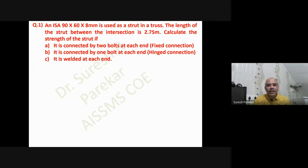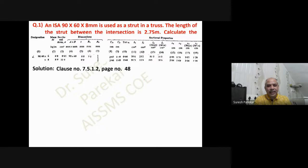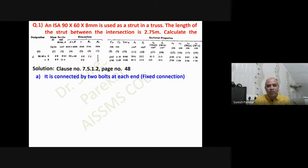We are interested in analyzing the ISA 9060 by 8 for these three cases. First, we have to look at the properties of this section. We are going to use Clause 7.5.1.2, page number 848, considering that the angle is connected through one leg only — that is an eccentric connection — and it is connected by two bolts at each end as a fixed connection.